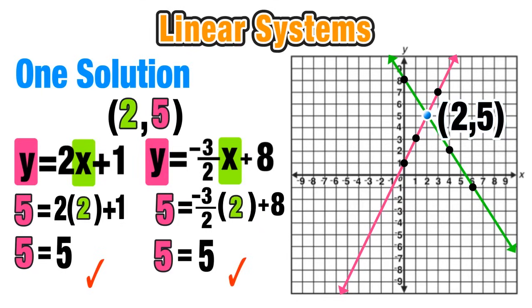Now 2, 5 is the only solution, is the only point that will work for both of these linear equations. You can try any other point. It might work for one, but it will not work for both. Go ahead. I dare you. Try any other point. Do it.